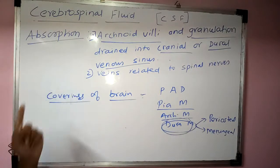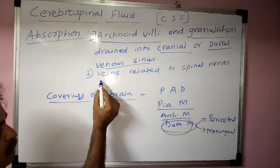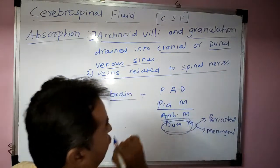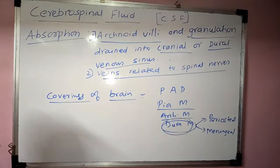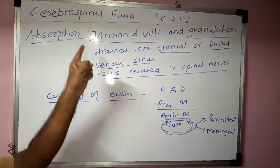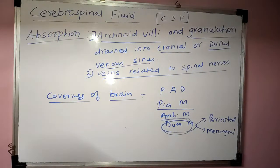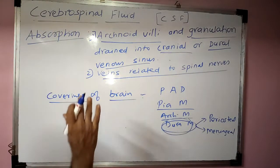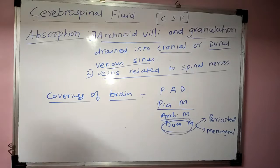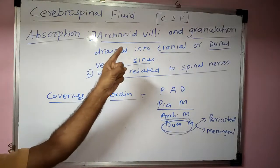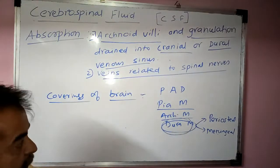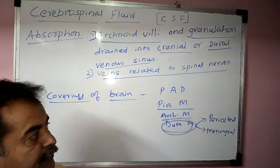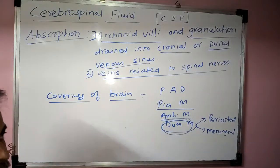Additionally, the veins related to the spinal nerves also absorb the CSF. So CSF is absorbed by arachnoid villi and granulations, and by veins related to the spinal roots.